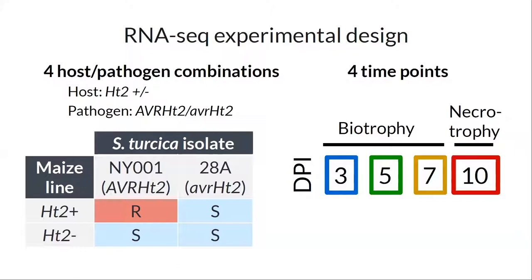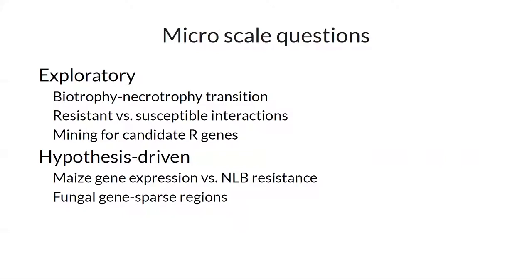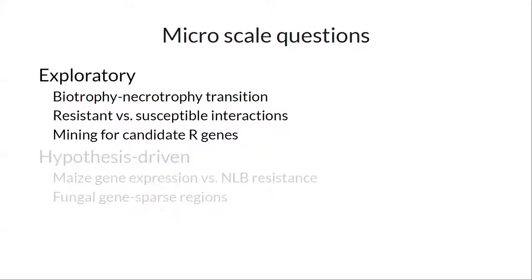There are appropriate negative controls: mock-inoculated maize plants on the host side, and on the pathogen side we have just pathogen isolates growing in a petri dish in culture. We have a lot of questions that we've asked and answered, and I'm going to focus on a small set of them under two umbrellas: the exploratory questions and the hypothesis-driven ones.